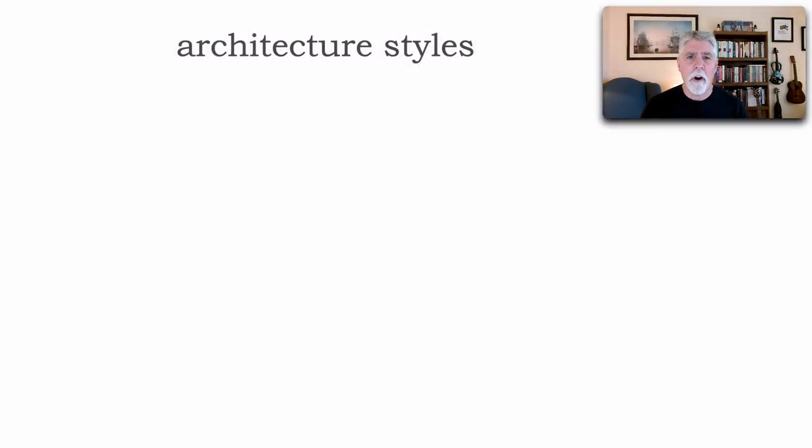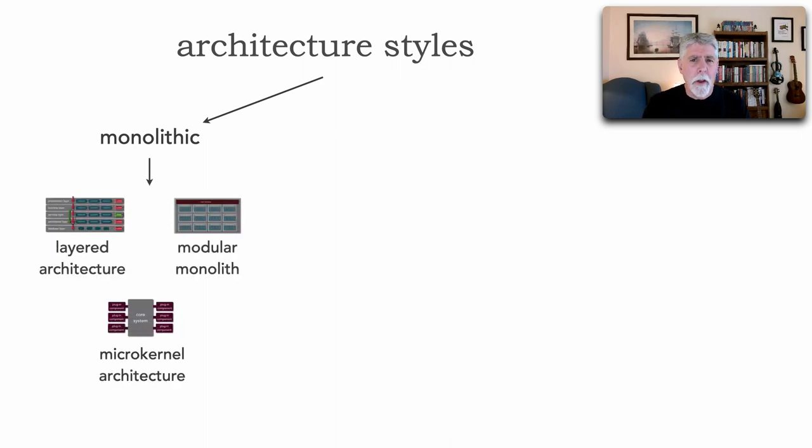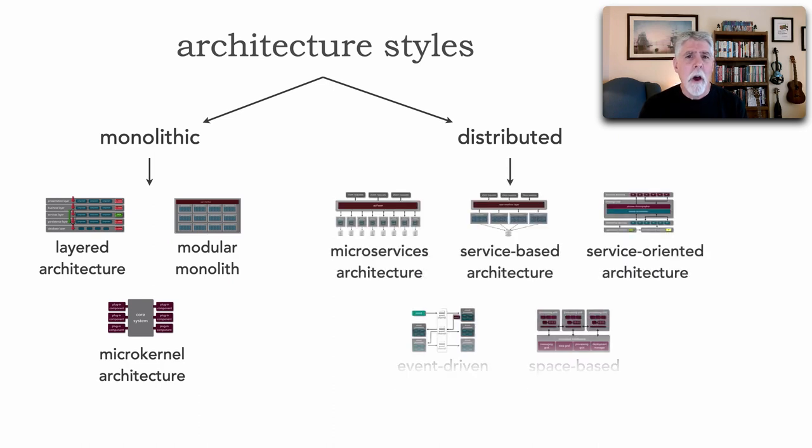When we take a look at the various architecture styles that are out there, they really fall into two main categories: monolithic architectures, where all of the code is deployed as a single unit of software, including things like the layered architecture, modular monolith, and microkernel architecture. On the other side are distributed architectures deployed through multiple units of software, including microservices, service-based architecture, service-oriented architecture, event driven architecture, and space-based architecture.